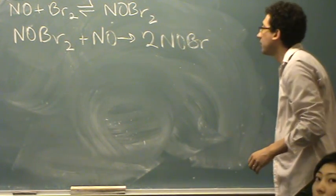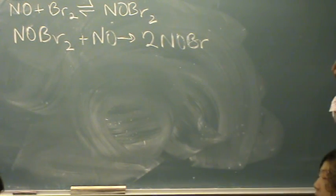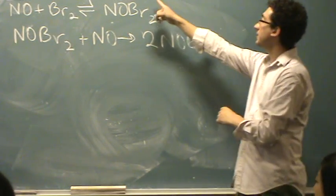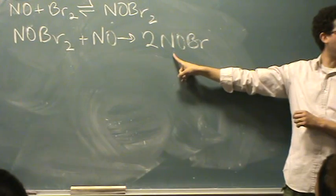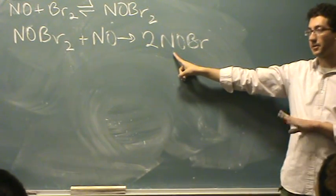In this case, when the slow step is not labeled, the rate law that you're looking for is the one that looks like it produces the product. So if the product is NOBr, it's the second rate we're looking for. This is the one that produces the product we're looking for.